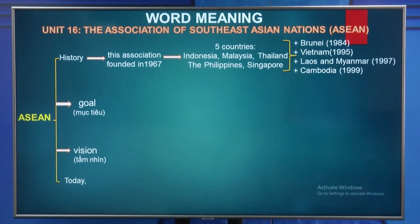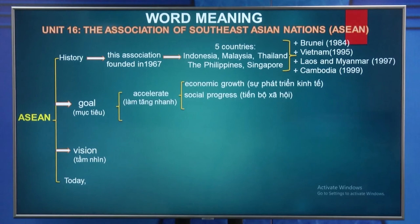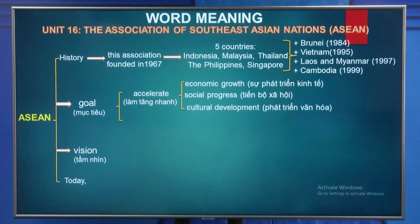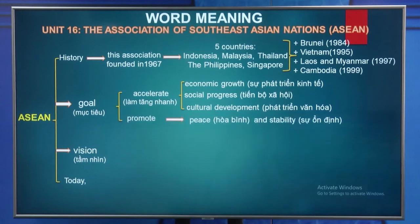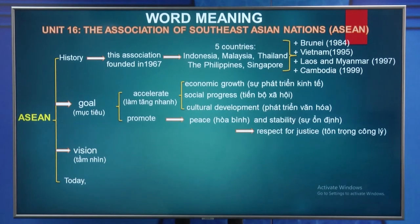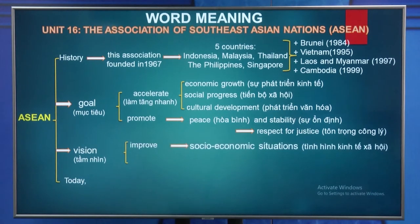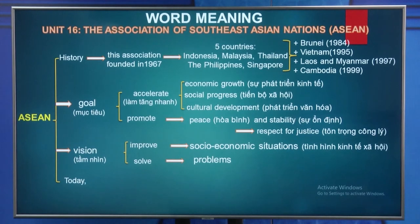ASEAN has two goals. The first is to accelerate economic growth, social progress, and cultural development. The second is to promote peace and stability through respect for justice. About the visions of ASEAN, it has two: the first is to improve socio-economic situations, and the second is to solve problems among ASEAN nations. Today, ASEAN covers many fields of development.